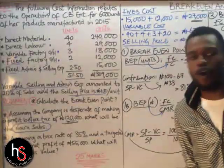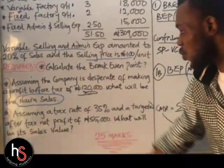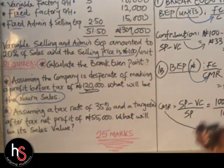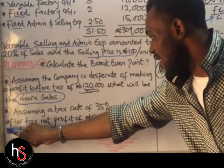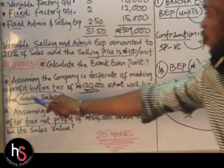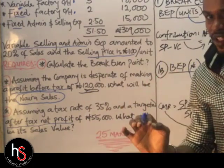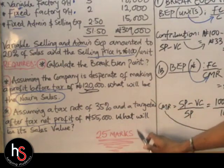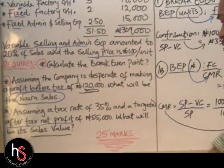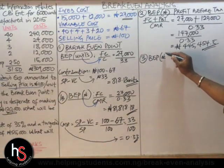Question three: Assuming a tax rate of 35% and a targeted after-tax net profit of $55,000, what will be the sales value? Note the difference — question two was before-tax, this is after-tax, so the formula is different. We are solving for breakeven point in Naira with profits after tax.